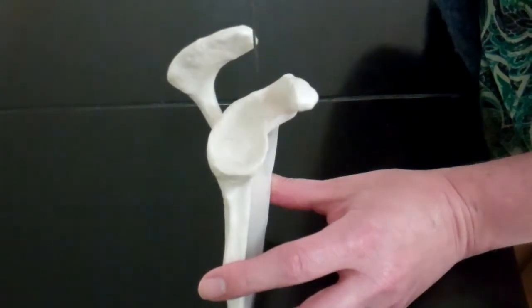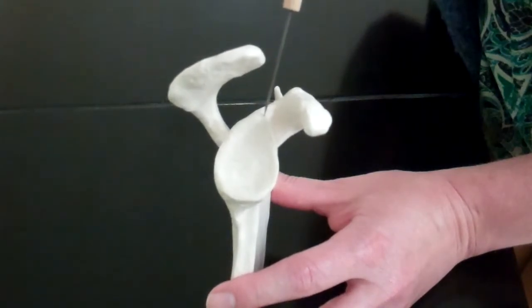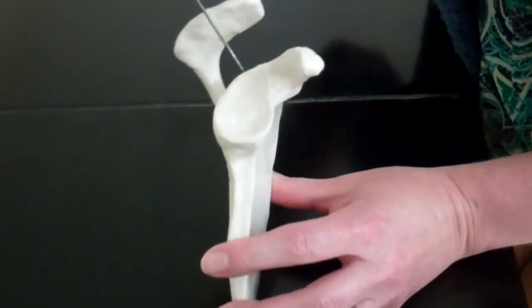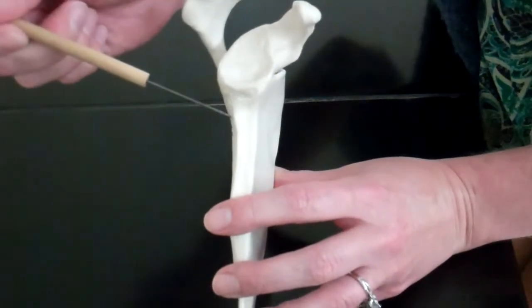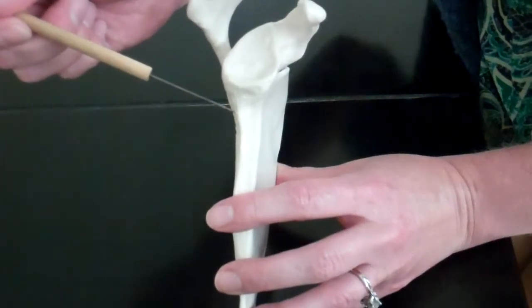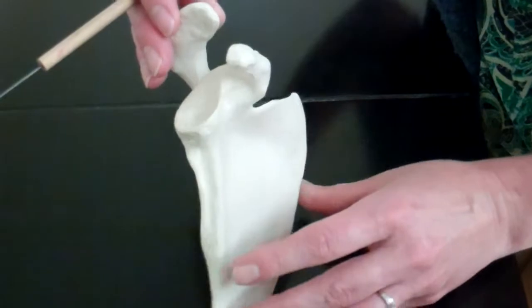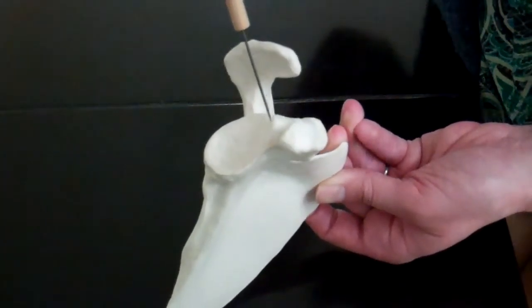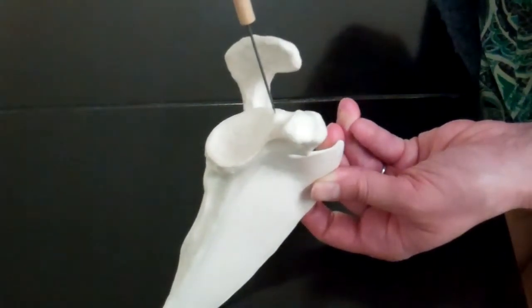Now if we look really closely, it's kind of hard to see on these models, there are two bumps. We call them tubercles. There's one above the glenoid cavity which is our supraglenoid tubercle and then there's one below it which is our infraglenoid tubercle. And if you turn it just a little bit you can see the bump a little bit better below and above. Really hard to see, you guys have to go get your hands on those bones to find them.